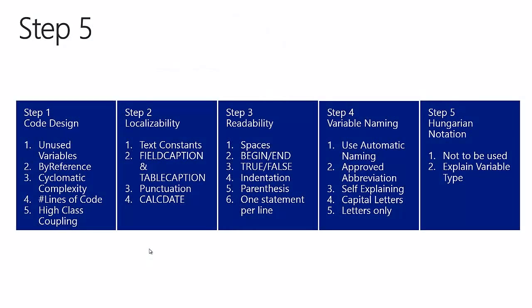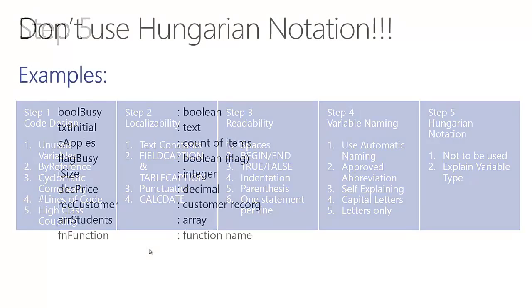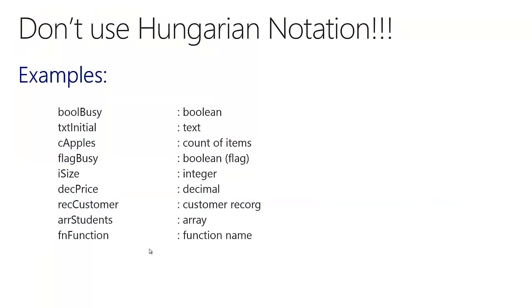The last part of this video is about Hungarian notation. This way of naming variables was invented by a Hungarian employee of Microsoft many years ago, with the intention of explaining the type of the variable in the name. This practice was abandoned by Microsoft since 1996 and should never be implemented in Dynamics NAV or in any Microsoft programming language.